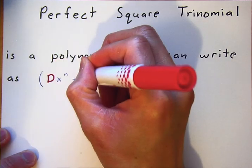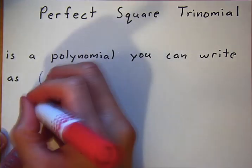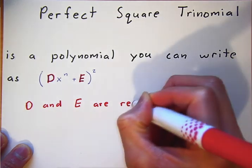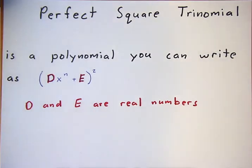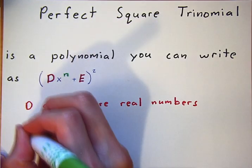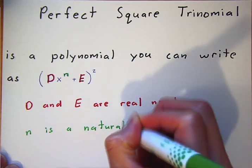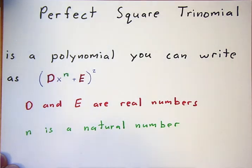The letters d and e are both real numbers. D and e can be any sorts of numbers. N, however, is a natural number.